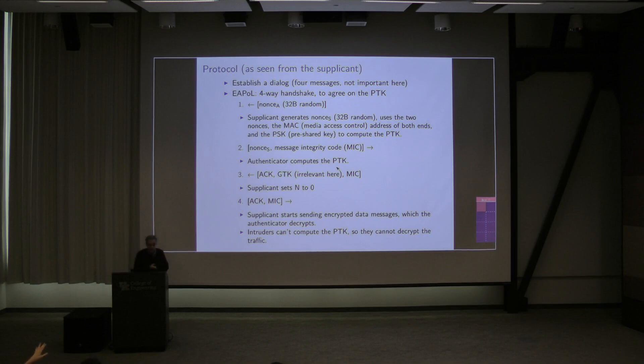In fact, it uses the two nonces, the one it generated and the one that it heard. It also uses the MAC addresses, media access control addresses, of it and of the other guy. And it uses the pre-shared key, because there is some sort of a hidden key that you have to type into your laptop to agree to the wireless access point. All of those things are mushed together by an algorithm, and it creates this PTK. Anyone listening in can't do that. Why not? The person listening in doesn't know the pre-shared key.